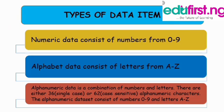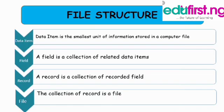Let's talk about the types of data items. We have numeric data, which consists of numbers from zero to nine. Then we have alphabetic data, which consists of letters from A to Z. Then we have alphanumeric data, which is a combination of numbers and letters, including both uppercase and lowercase characters. The alphanumeric data set consists of numbers 0 to 9 and letters A to Z, either uppercase or lowercase.